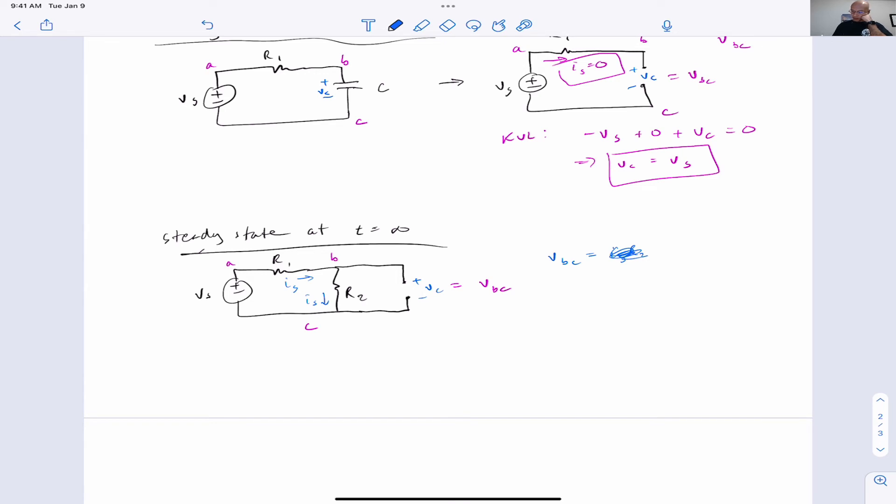So we'll put here VS like this. So if we know VS, we know R1, R2, that's enough to get us VC.